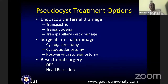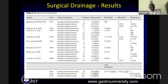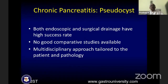Indications for treating pseudocysts: complicated pseudocyst should always be treated, symptomatic pseudocyst should be treated, and asymptomatic high-risk cysts due to risk of complications. Treatment options are endoscopic versus surgical. Depending on anatomical location, resectional surgery can be considered if disease is confined to the tail or head. Endoscopic drainage has a failure rate of about 15%, with similar results to surgical drainage. Both have high success rates. No good comparative studies are available, and a multidisciplinary approach should be tailored to the patient and pathology.